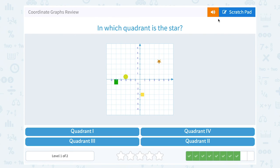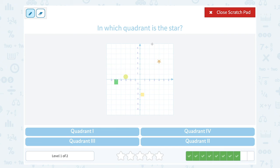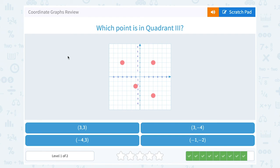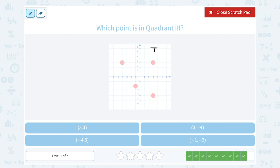In which quadrant is the star? Okay, well my star is in the first quadrant or quadrant 1. Which point is in quadrant 3? Okay, well remember our quadrants go like this: 1, 2, 3, and 4. Okay, so for quadrant 3, that would be this red point here.